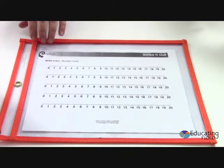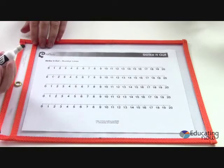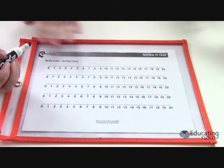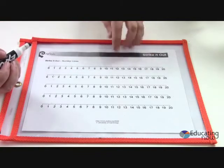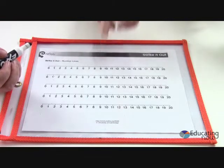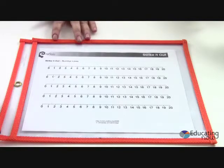So how this game works is one of the players starts and what they'll do is they can decide whether they want to add or subtract any two numbers that they choose and then they'll circle the answer and then the partner has to start with that answer. So we'll play and you can see how it works.